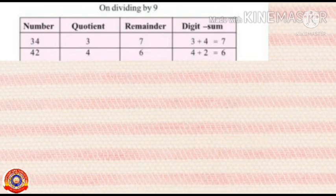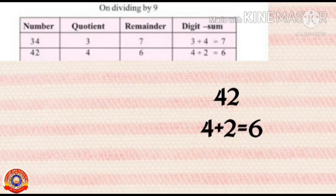Next 42, to find its remainder, just add 4 and 2. That means 4 plus 2 equals 6. So, the remainder is 6.